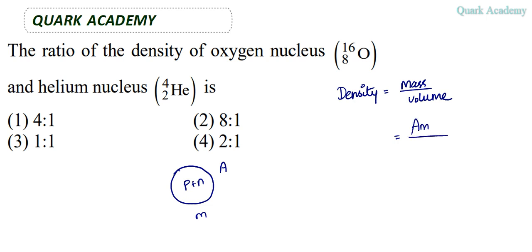And volume, we can consider the nucleus as a sphere. So the volume of a sphere will become 4 by 3 pi r cube, where r is the radius of the nucleus.